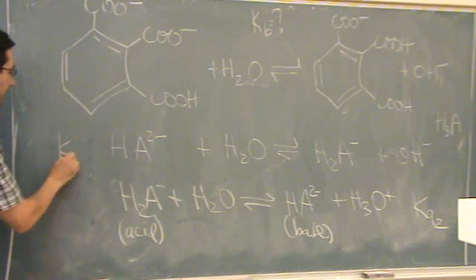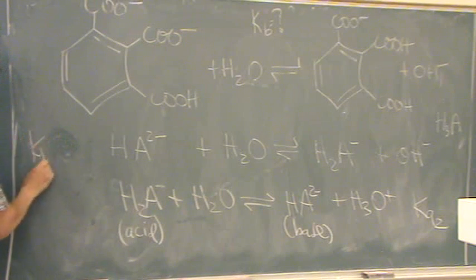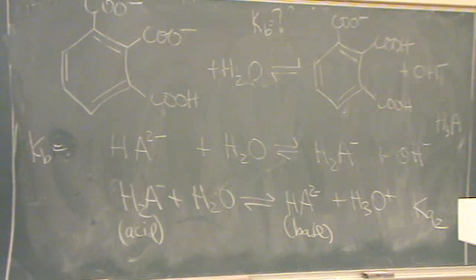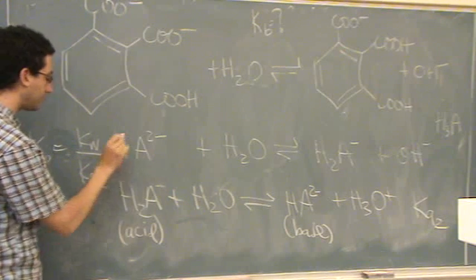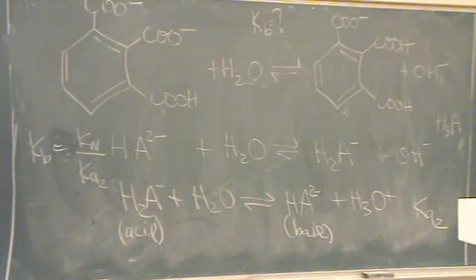Well, if I want this KB, how will I find it? KW. KW divided by Ka, and specifically Ka2. Is that okay? And Ka2 is given in the problem.